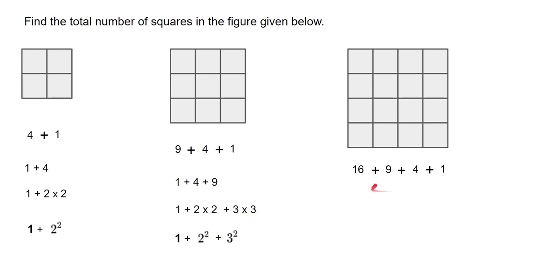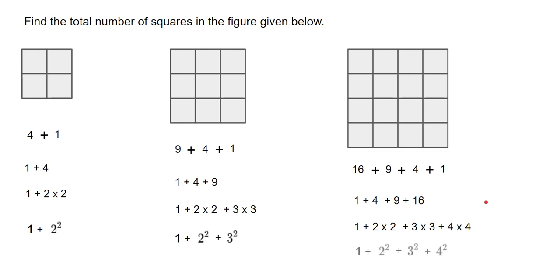Similarly, for the four by four figure, we write it as one plus four plus nine plus sixteen. Looking at it, you can clearly see this is also one times one plus two times two plus three times three plus four times four, which can be represented as one squared plus two squared plus three squared plus four squared. That is the total number of squares you can find in this figure.